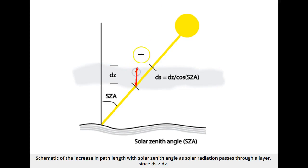For Sun directly overhead, the path length through the layer is a minimum, which means that the greatest amount of radiation should be able to pass through.